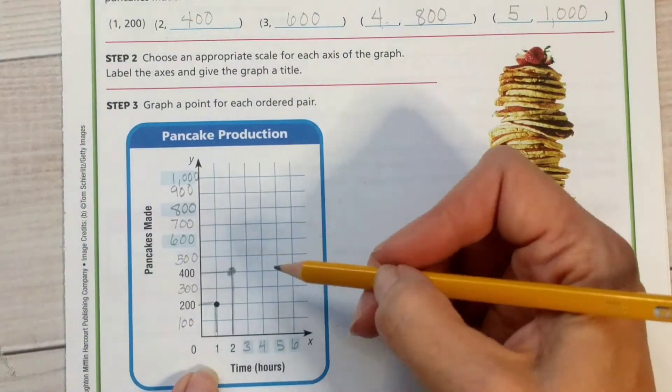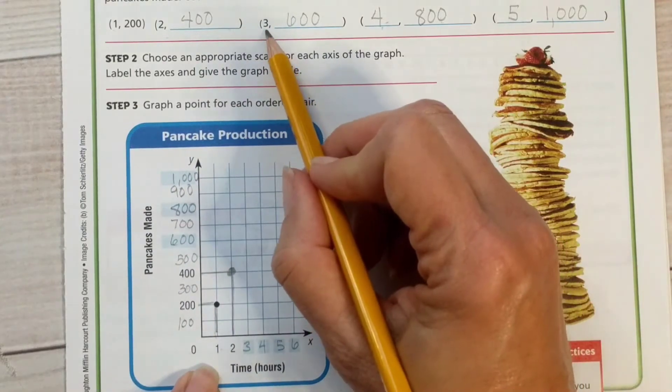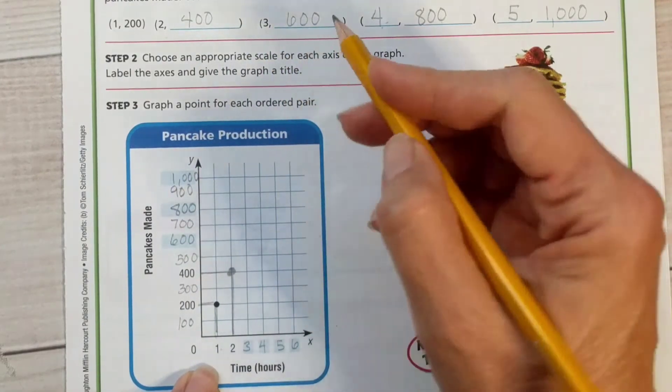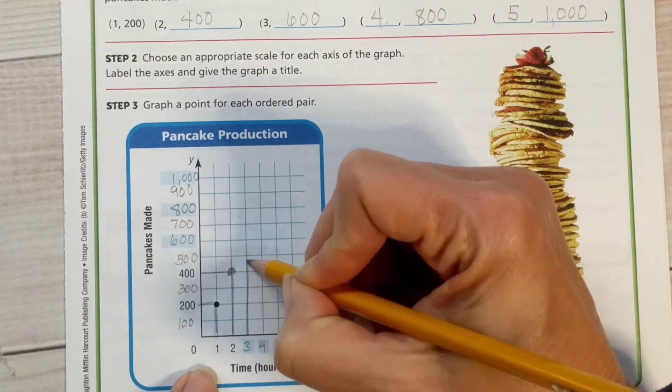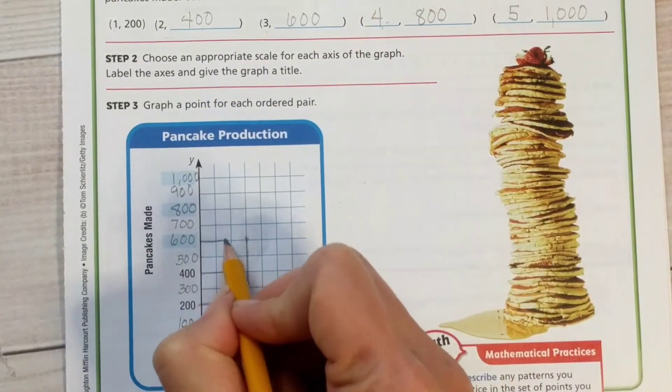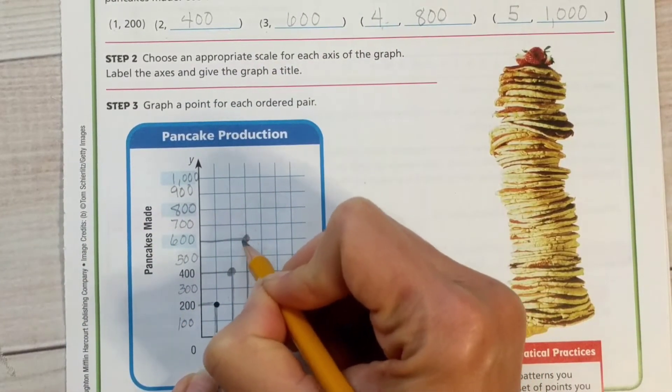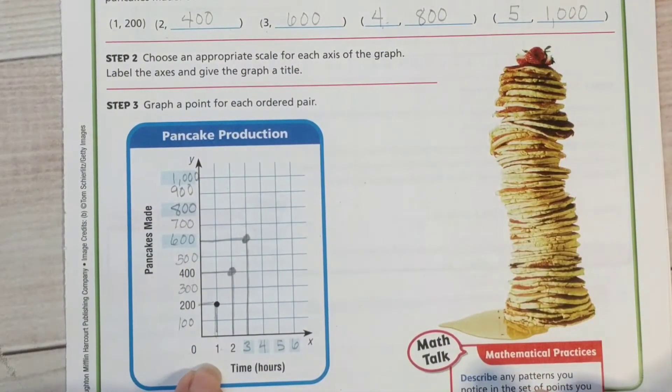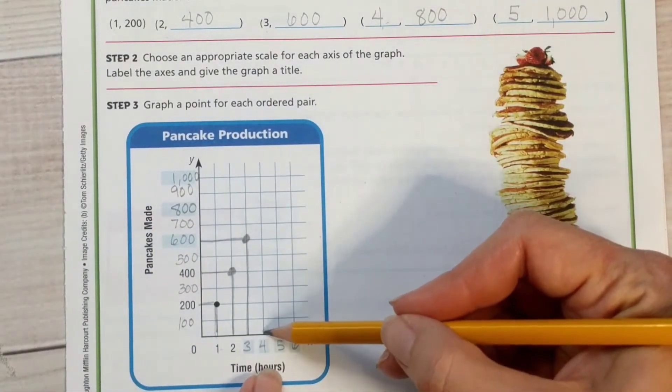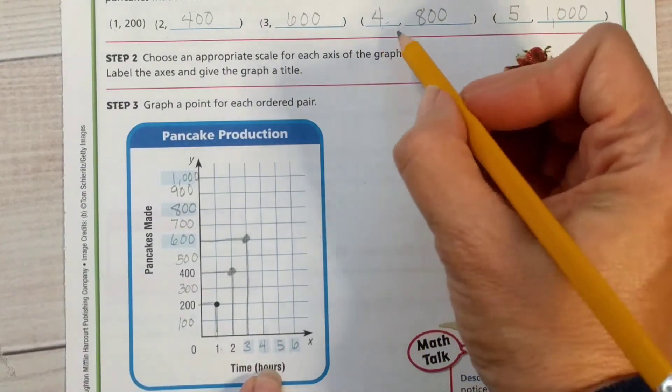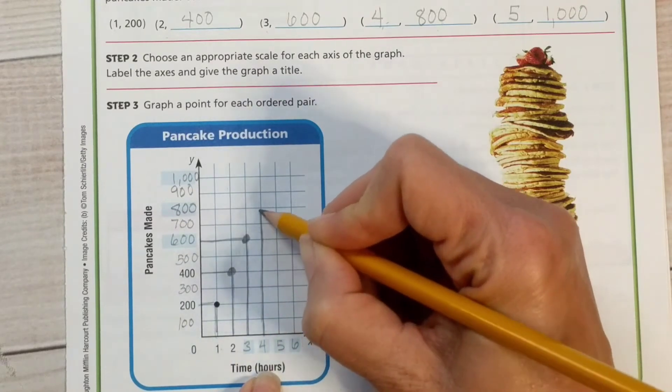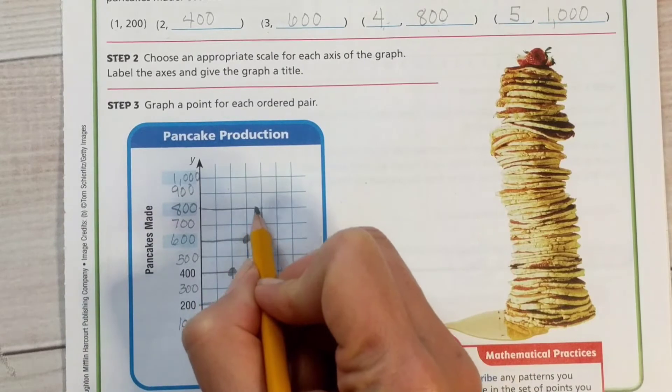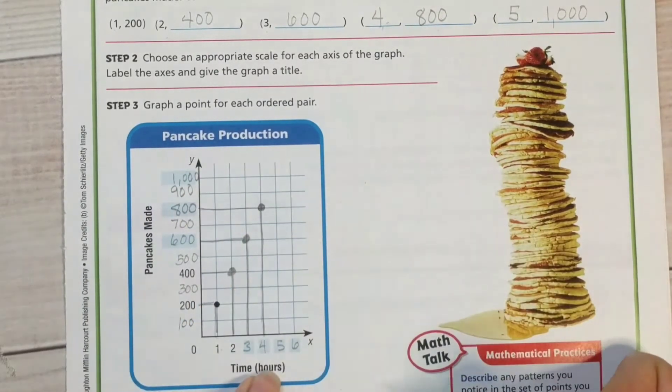With 3, we're going to, our ordered pair for 3 is 3 and 600. So we're going to go up from the 3 all the way to the 600 and across to the 3. And there we go, there's our third point. For number 4, we're going to start here. So our ordered pair is 4 and 800. So we're going to go up to 800 and across from 800 over to the 4 and put a dot.